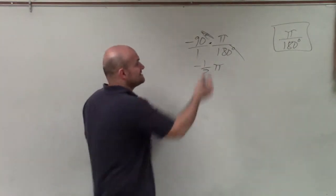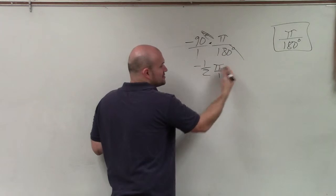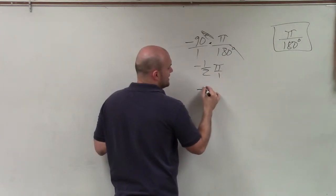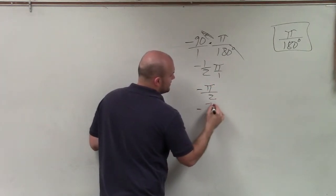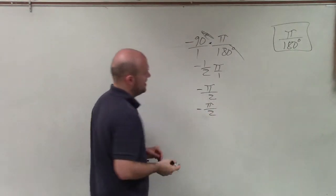Now, remember that pi is still in the numerator. It's not in the denominator. So we can multiply these across, and I'll have negative pi halves, or just write it in front, negative pi halves.